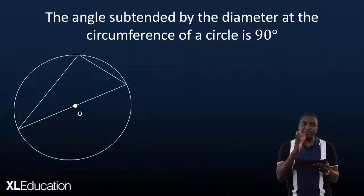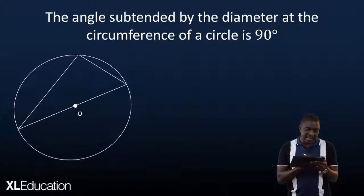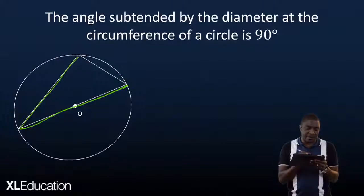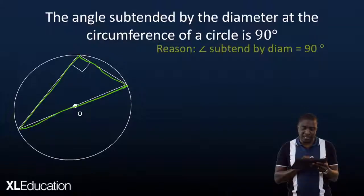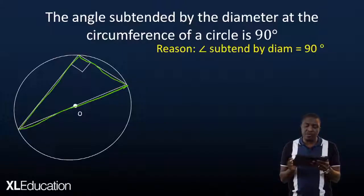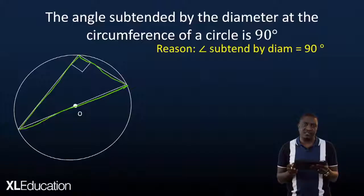The next theorem states: the angle subtended by the diameter at the circumference is equal to 90 degrees. This is a diameter on the diagram, and it subtends this angle at the circumference, which is 90 degrees. Remember to state the reason correctly: angle subtended by the diameter equals 90 degrees.